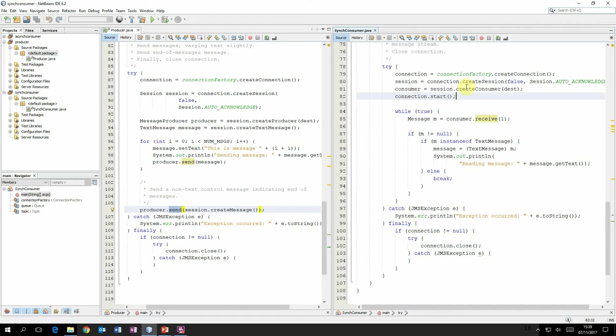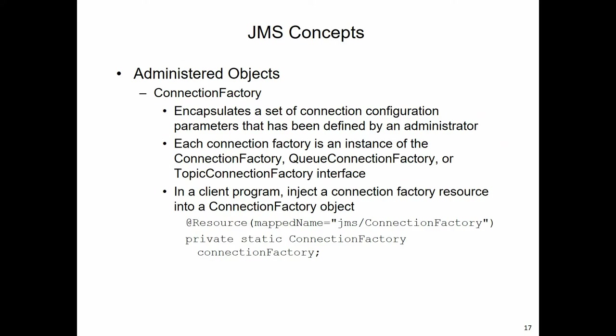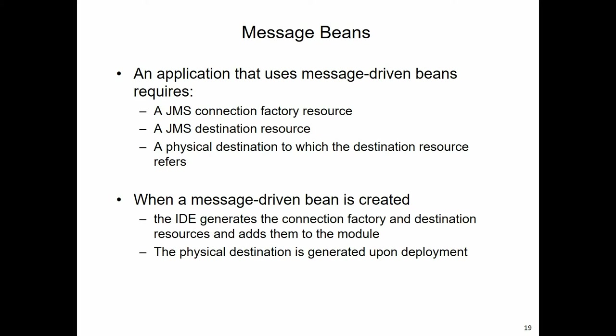There's another example - that of asynchronous consumption - and I'll leave you to look at that in your own time. The next few slides talk about how we can connect to these various objects, and again I'll leave you to look at that in your own time. Let's focus a little bit more on the message-driven beans. Each bean will require a connection factory resource, a destination resource, and a physical destination to which that resource refers - all taken care of by JNDI.